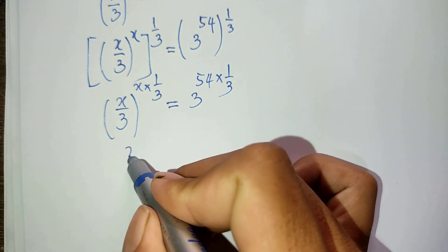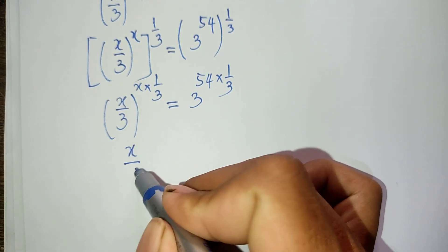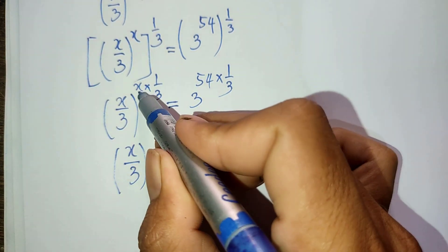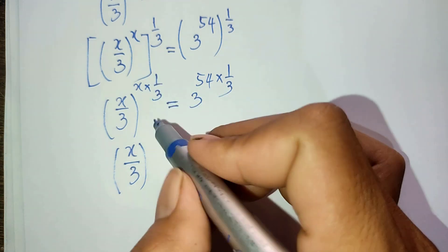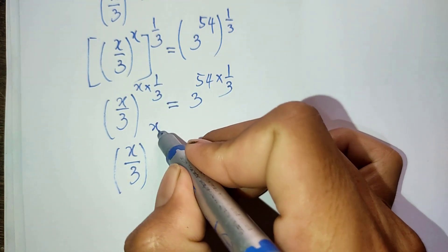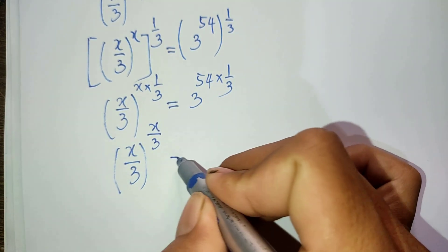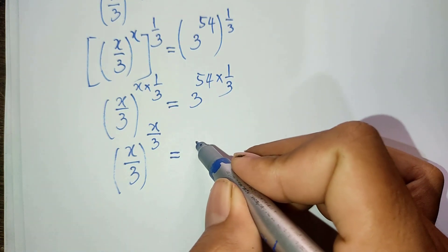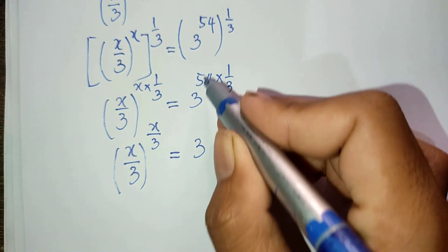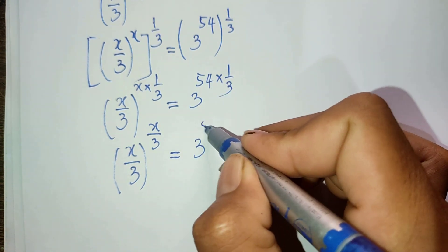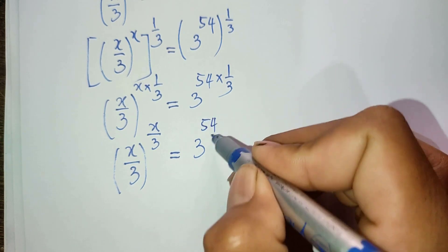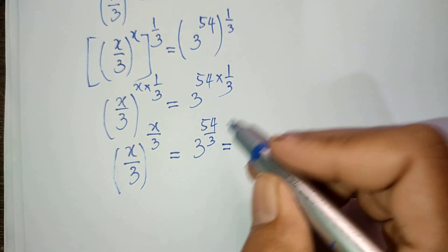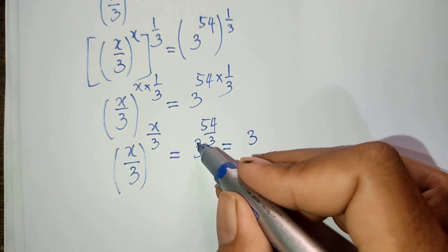We get 8 divided by 3, all to the power 8 times 1 divided by 3, equals 3 to the power 54 times 1 divided by 3. So 8 divided by 3 to the power h equals 3 to the power 54 divided by 3, which equals 3 to the power 18.